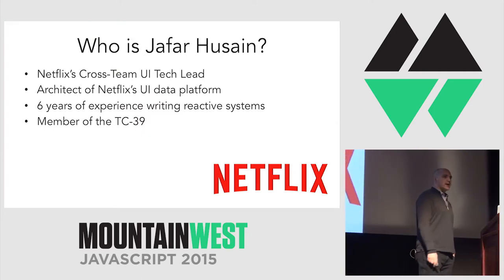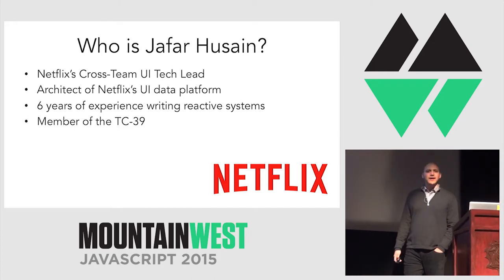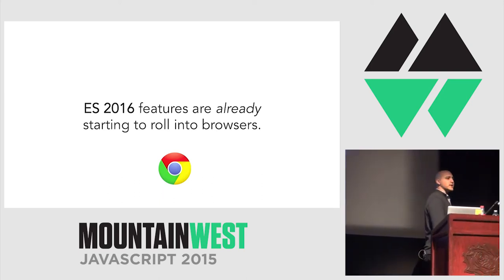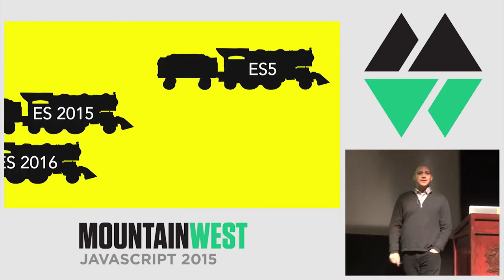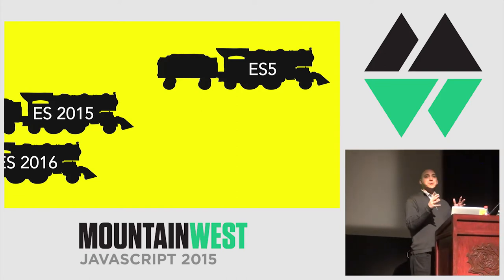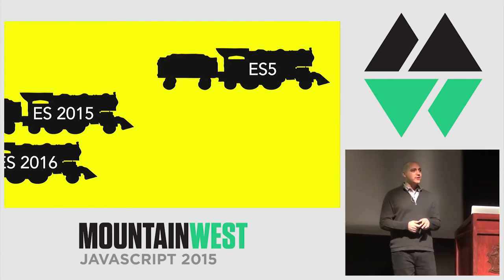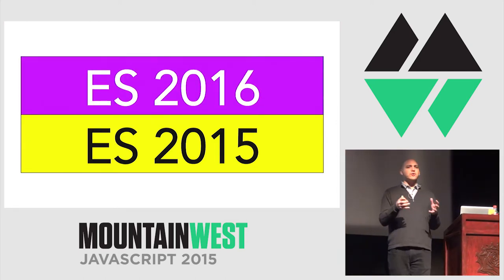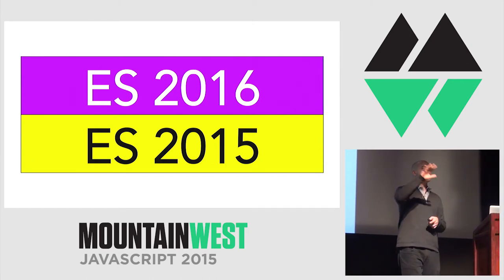A little bit about me. My name is Jafar Husain. I'm Netflix's cross-team tech UI lead, and I'm a member of TC39, and that's really why I'm here. ES2016 features are already starting to roll into browsers as we speak. That's not surprising because ES2016, as the name would indicate, is being developed right alongside 2015. We're doing concurrent development for JavaScript releases, planning ahead as we develop ES2015 features. This concurrent development allows us to lay groundwork in the previous version that we can build on top of in the next version.